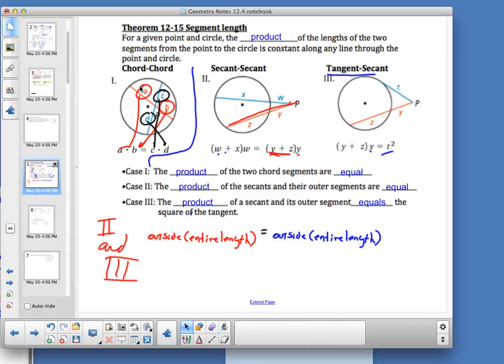Y is the outside part and W is the outside part. X plus W is the entire length of that segment. So it boils down to outside times entire length of one is equal to the outside times entire length of the other. That's the relationship we're working with today.